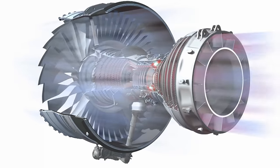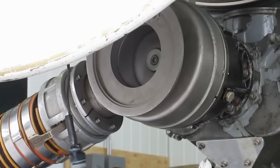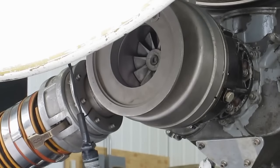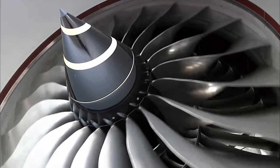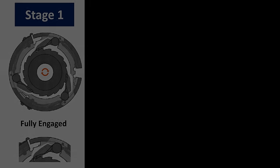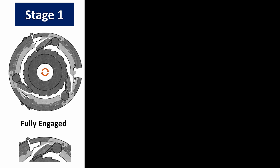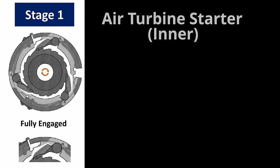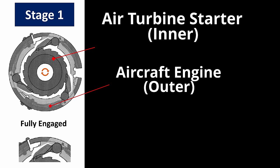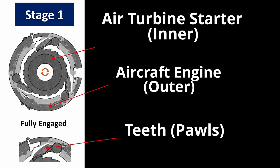Once the engine is self-sustaining, we need to disconnect the air turbine starter from the engine. This is achieved through a mechanical wonder known as a centrifugal clutch. This is a 2D representation of the clutch. The center gear here is connected to the air turbine starter, and the outer gear is connected to the engine. This clutch has teeth, or pawls, which are spring-loaded.